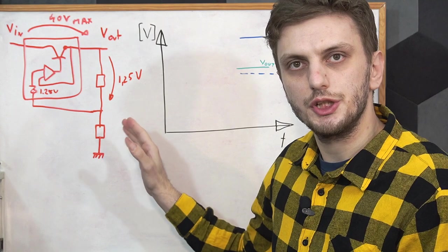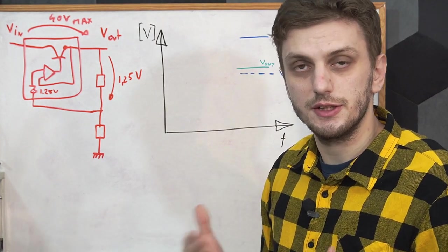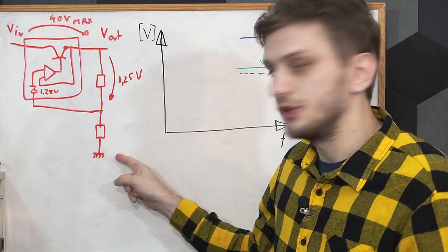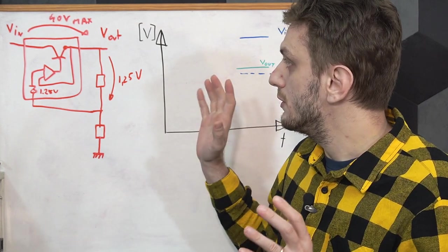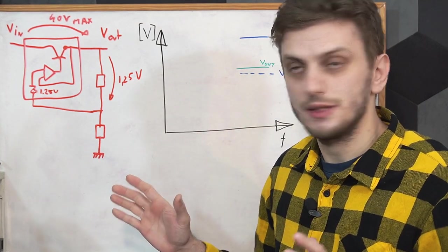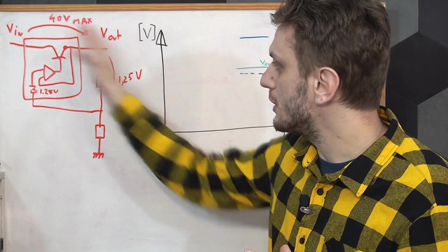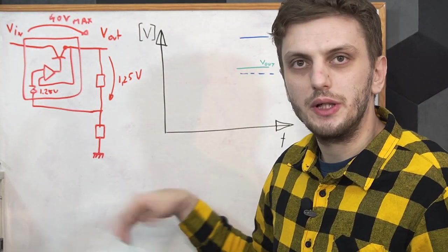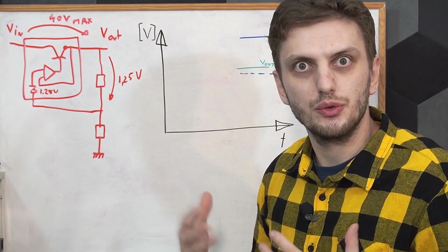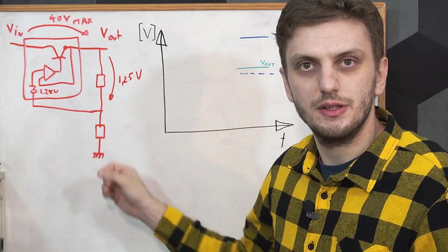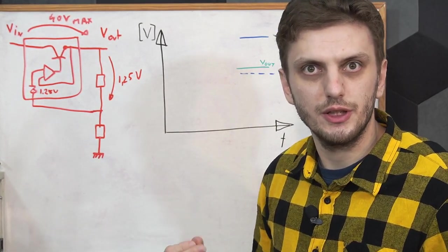But it's important to mention that the regulator doesn't have any limit in reference to ground. So the data sheet is only telling us what voltages we need between the terminals but not really where this voltage needs to be in reference to ground. This is why the LM317 is also called a floating regulator.